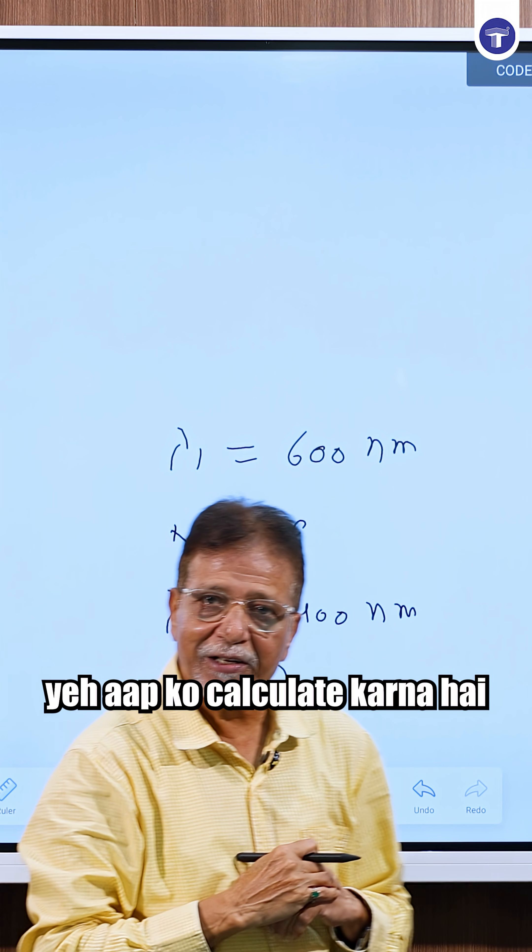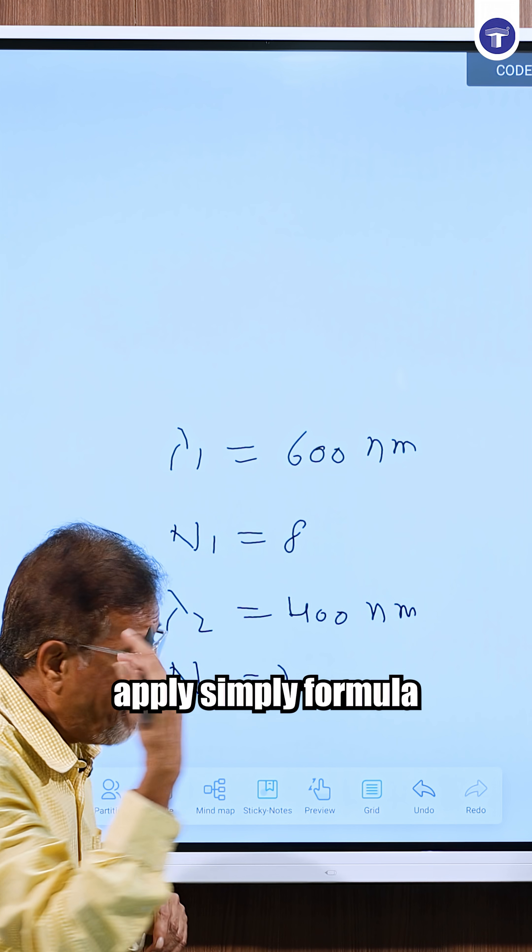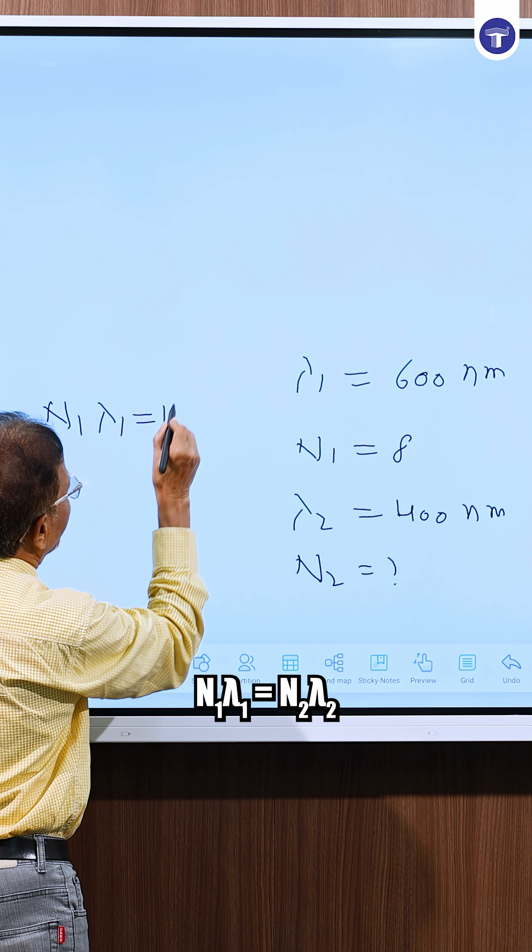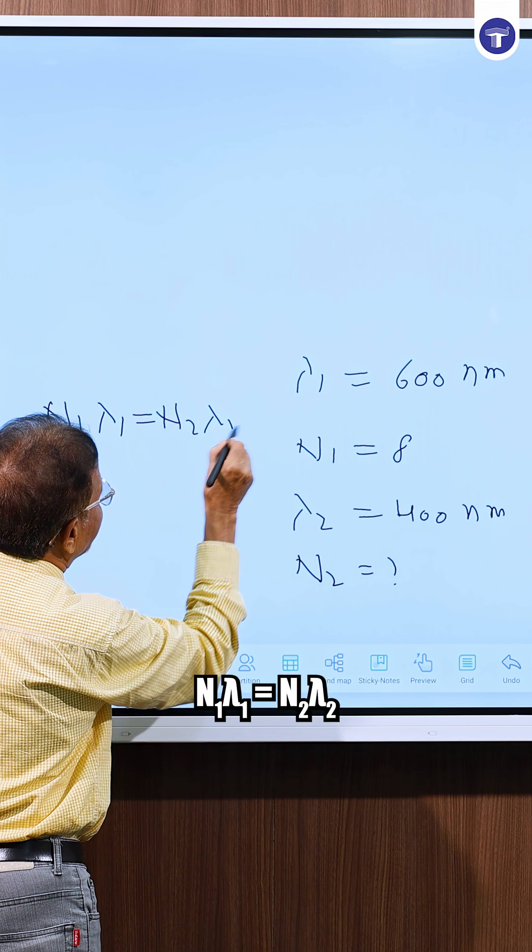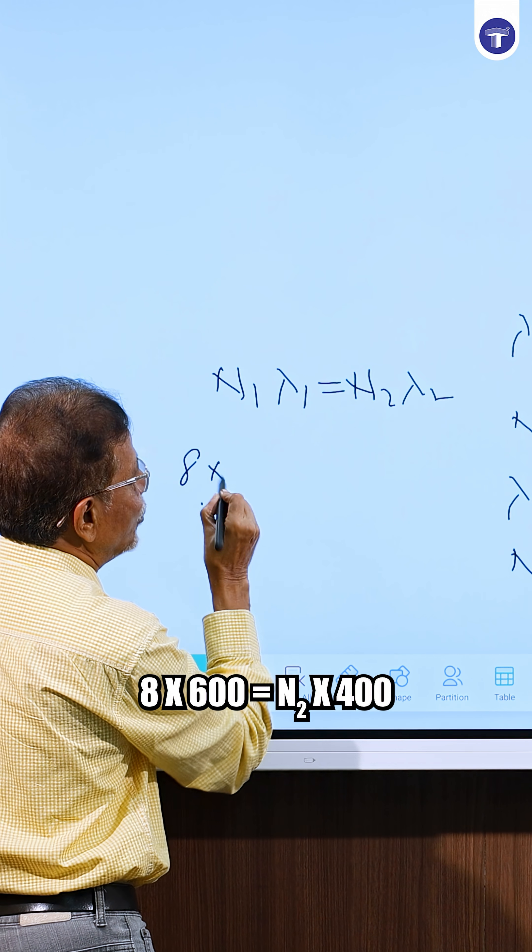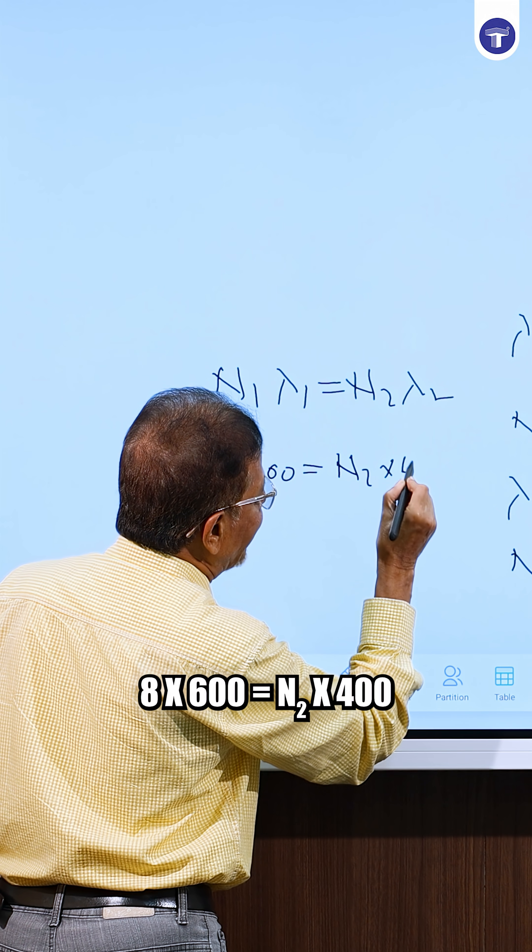The wavelengths are in nanometer, no need to change it. We can use them as is. Apply simply the formula: n1 lambda 1 is equal to n2 lambda 2. That is 8 into 600 is equal to n2 into 400.